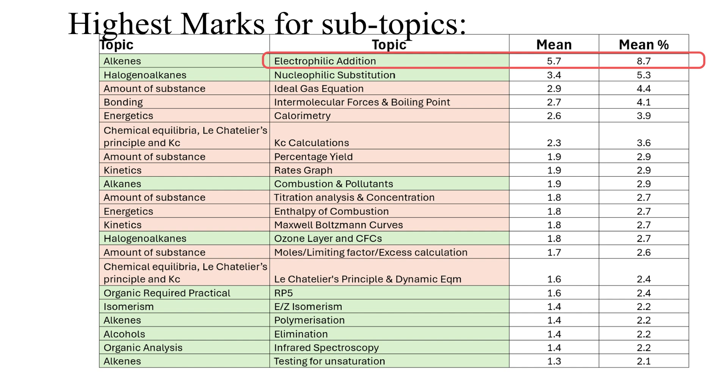From the alkenes topic electrophilic addition, so that's the mechanisms and understanding about the carbocation intermediates and isomers, that has been worth on average 5.7 marks per AS paper 2 which actually is 8.7 percent of all of the marks available wrapped up in that one mechanism for electrophilic addition.